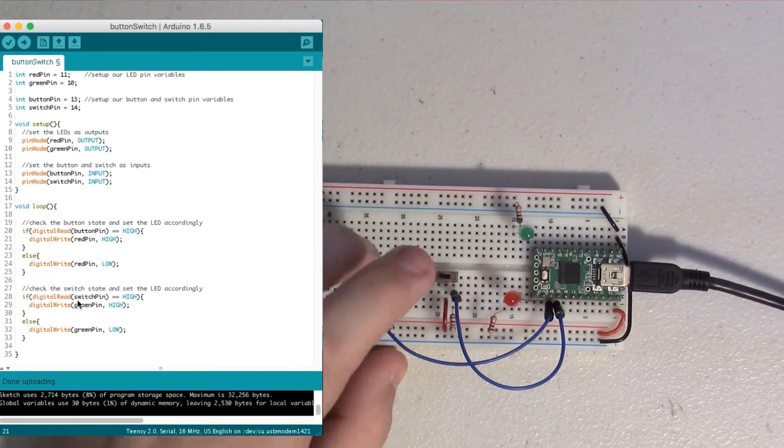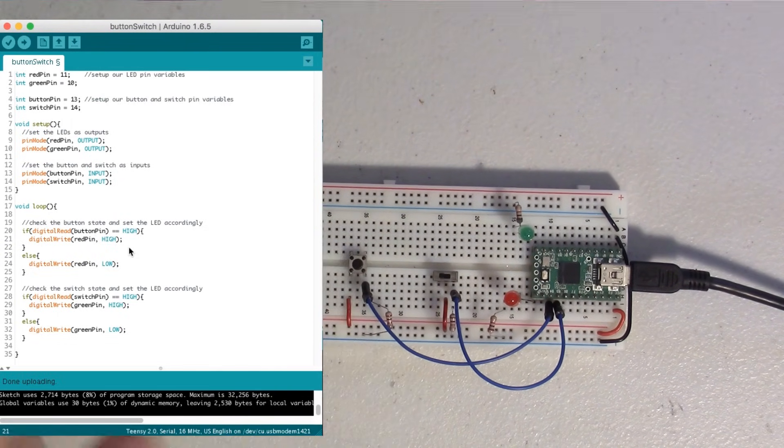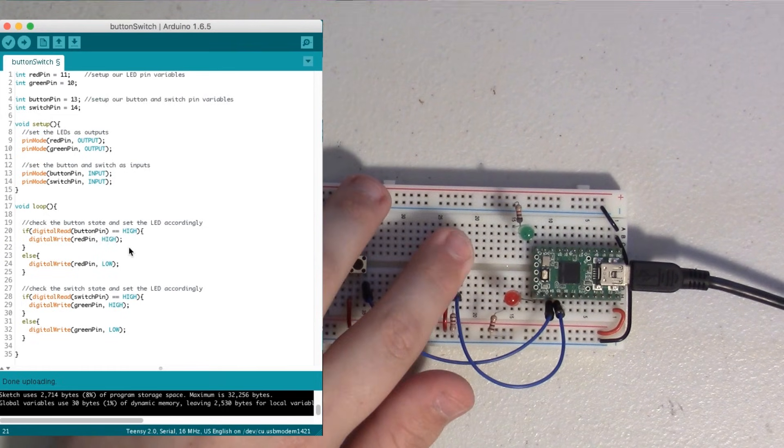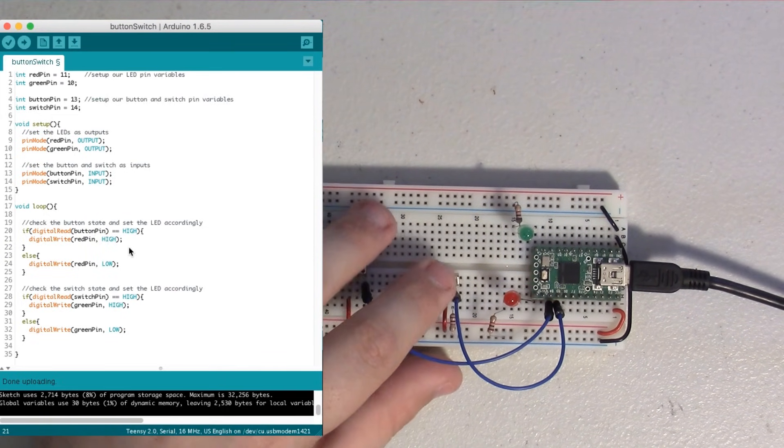So that's the basics of wiring up buttons and switches. They're really simple devices but really quite important to most projects. Usually you want at least some sort of a button to do something, or power switch, or selector switch. So that's where buttons and switches come in really handy.